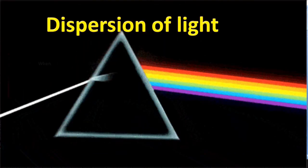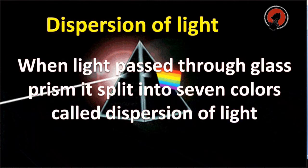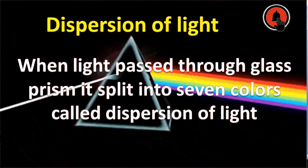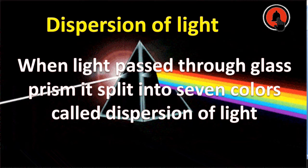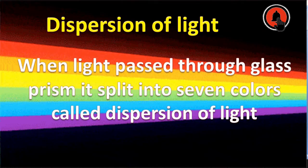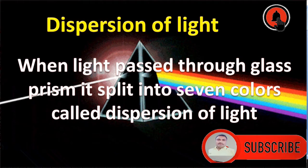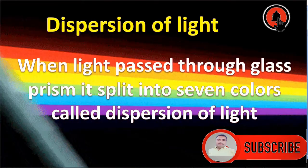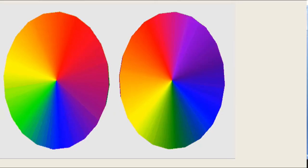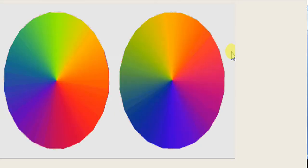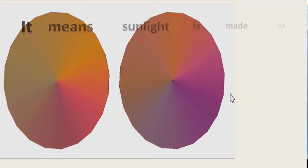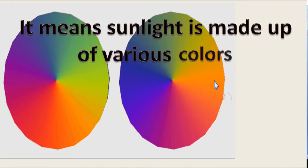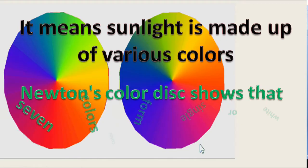Dispersion of light. When light passes through a glass prism, it splits into seven colors called dispersion of light. It means sunlight is made up of various colors.